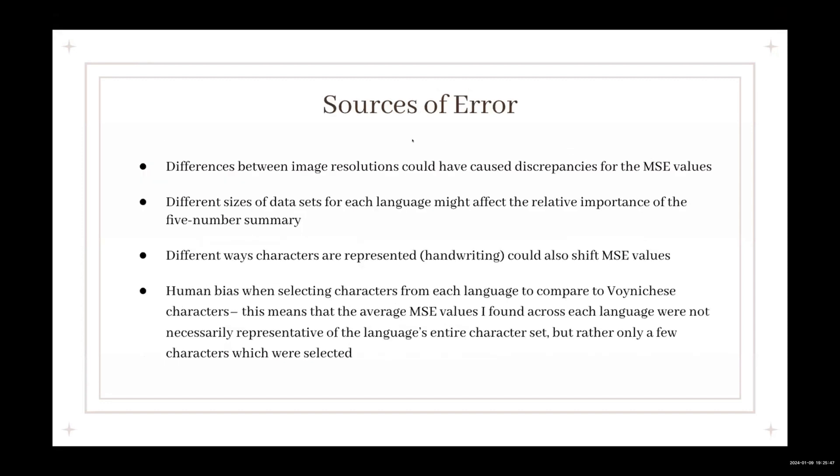In this process, there were several potential sources of error. One was the difference between the image resolutions. Another one was the different sizes of datasets for each language. For each language, I analyzed a different number of characters, which could affect the relative importance of the five-number summary. Another source of error could be the handwriting of each character, how each character can be represented differently, which could also change the mean square error values. The most important source of error that I thought was the human bias factor. The human bias, when selecting characters from each language to compare to Voynich's, meant that the average mean square error values I found across each language were not necessarily representative of the entire language character set, but rather only the few characters that I chose to study.